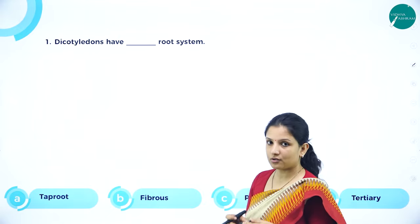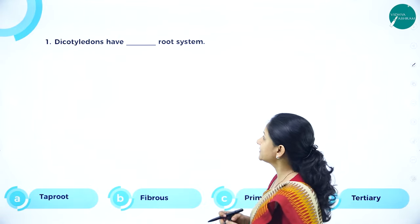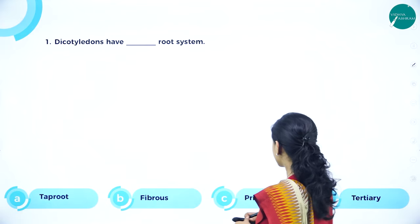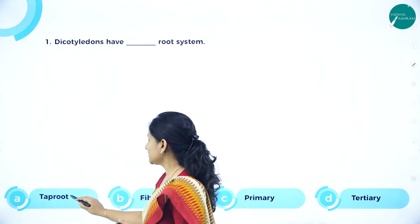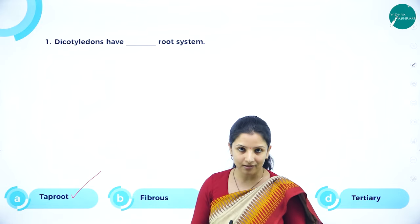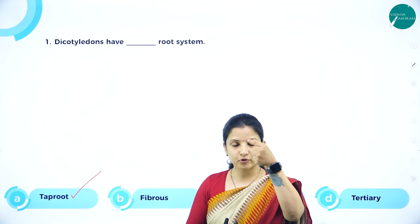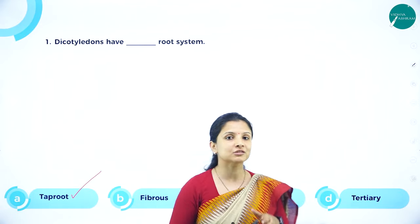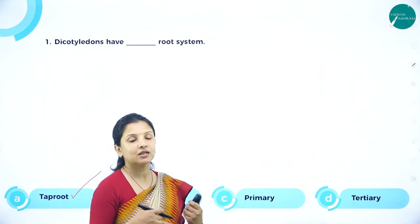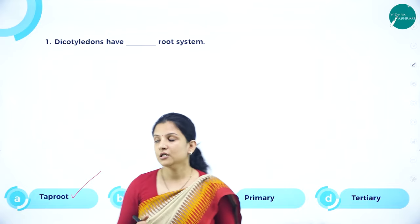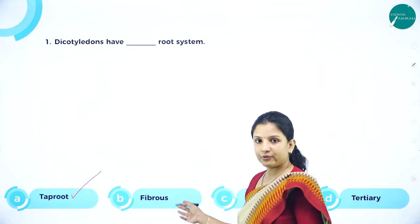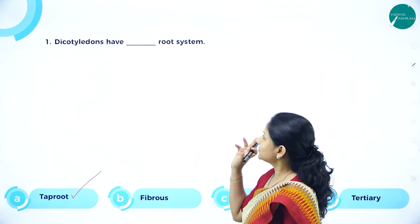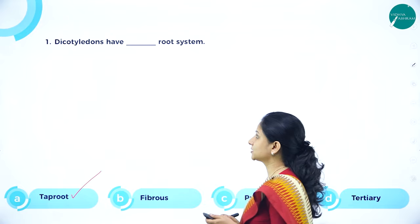Now let us move on to MCQs. Question: Dicotyledonous plants have dash root system. The options are taproot, fibrous root, or primary and tertiary. The right answer is taproot, because in taproot there is production of the primary root and from it the lateral roots — secondary and tertiary — develop. Fibrous root is found in monocots; in dicots it is taproot system.